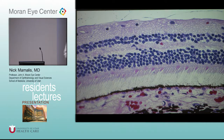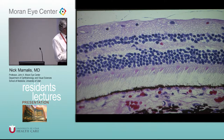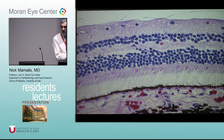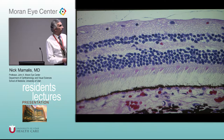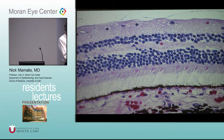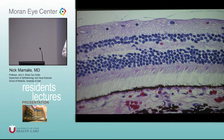The rods and cones start the cascade. The inner part of the rod and cone cell layer is where the cell has its activity — it has mitochondria and other things in there. Then this layer in the outer nuclear layer is where the cell body of the rods and cones lives.